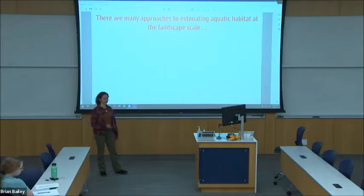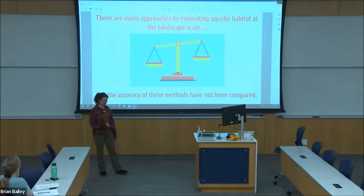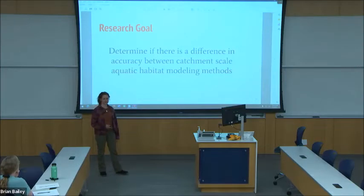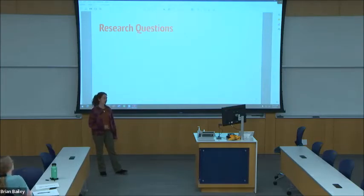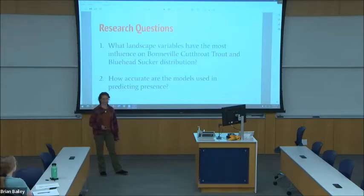There are many approaches to doing so at the landscape scale, but the accuracy of these methods have not been compared, and so that's where I fit into the picture. My research goal is to determine if there's a difference in accuracy between catchment-scale aquatic habitat modeling techniques, and I will address this goal with the following two questions: What landscape variables have the most influence on both Bonneville cutthroat trout and bluehead sucker distribution in the Bear River watershed, and how accurate are these models used in predicting their presence?